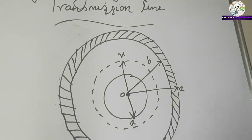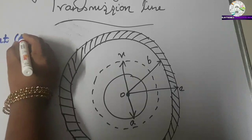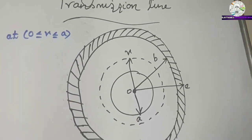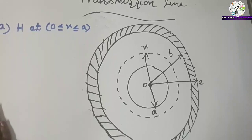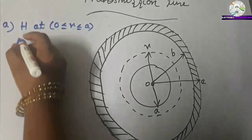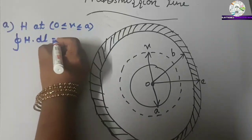First, we calculate the magnetic field intensity within the solid inner conductor. Case 1: find H at 0 ≤ r ≤ A. According to Ampere's law, the magnetic field around a closed path is equal to the current enclosed, so the closed line integral of H dot dL is equal to I.